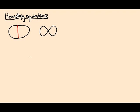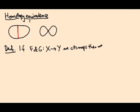But before I tell you what it means for two spaces to be homotopy equivalent, I have to tell you what it means for two maps to be homotopic, and this is much more closely related to what we've seen with loops already. So here's a definition. If F and G are maps from a space X to a space Y, continuous maps, then we say they are homotopic